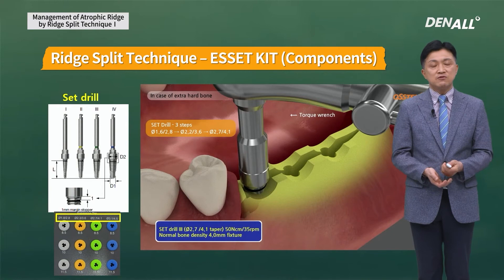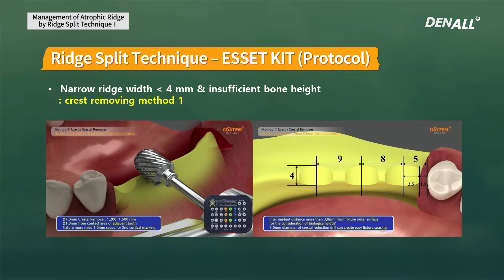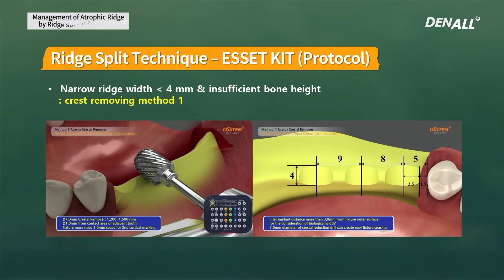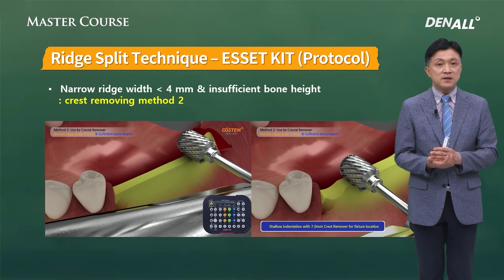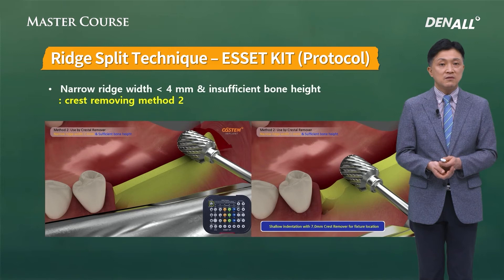The three components are not complicated — you just use them in order. The asset kit protocol is most frequently used when teeth 5, 6, and 7 are missing in a distal free-end case. Alveoloplasty is performed at the implant placement sites to secure approximately 4 mm of width. If the ridge width is less than 4 mm, this process is applied to the entire surgical site. When bone height is lacking, additional crest removing is done on the implant placement sites.